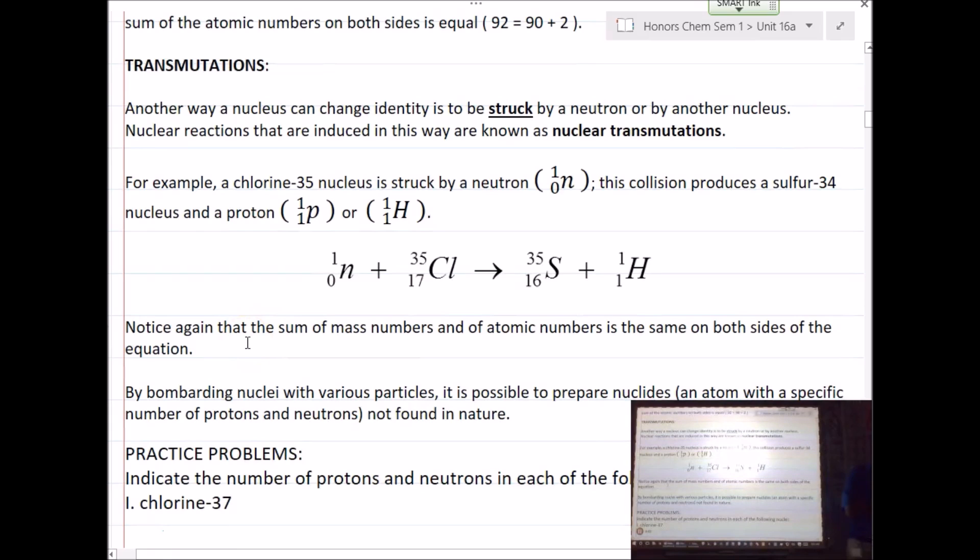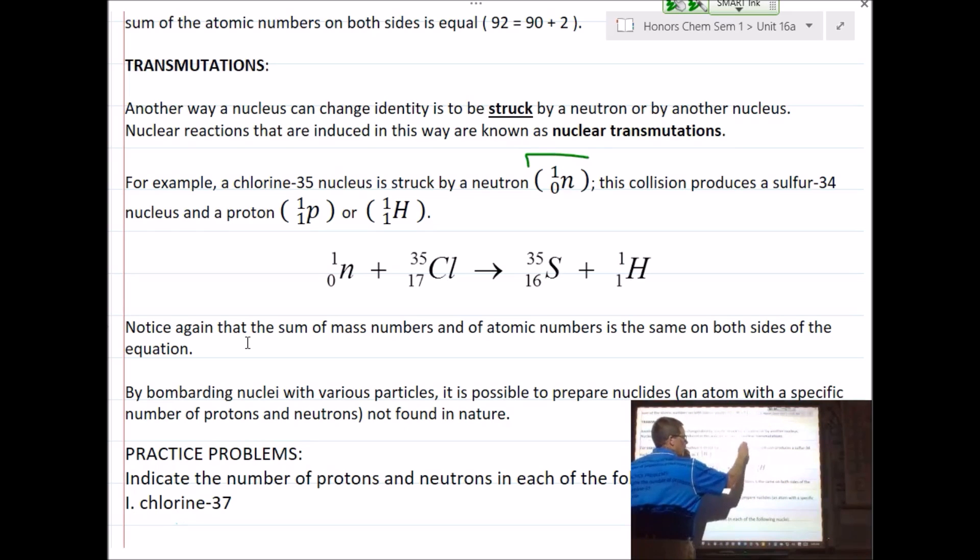Transmutations. When we talk about transmutations, these are just reactions. Whether something's being captured by the nucleus, or struck by the nucleus, or if it's being ejected out of the nucleus. Mutation, that tells you that something's changing. When we're looking at some of these subatomic particles, I'll give you a couple of them. Here is a neutron. In other words, it has a mass of 1, but this bottom number, what do these bottom numbers represent again? Protons. So a neutron, obviously, does not have a proton in it.